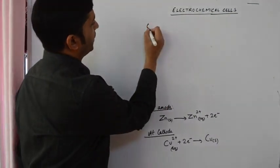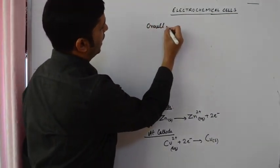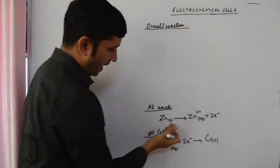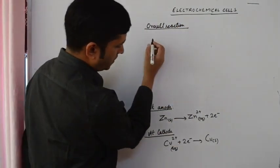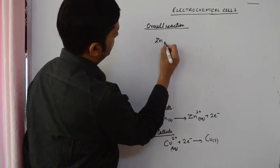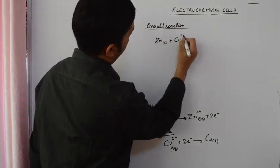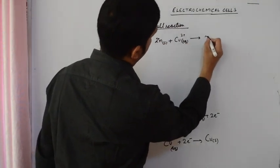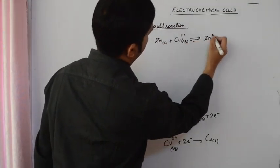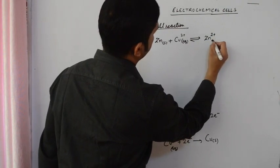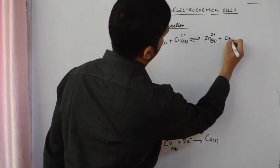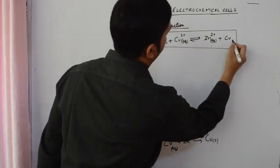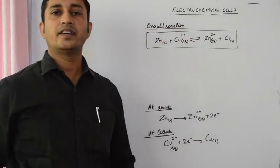Now we can see the complete overall reaction of the process. We can add the two half reactions: zinc plus copper ion gives zinc ion plus copper. This is the overall reaction for the zinc-copper electrochemical cell.